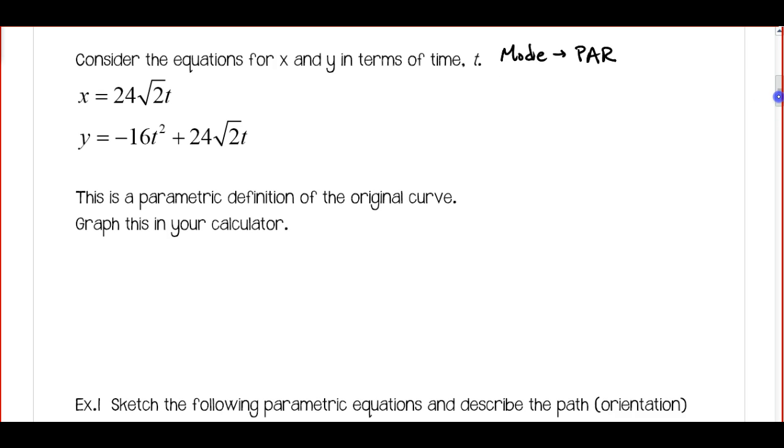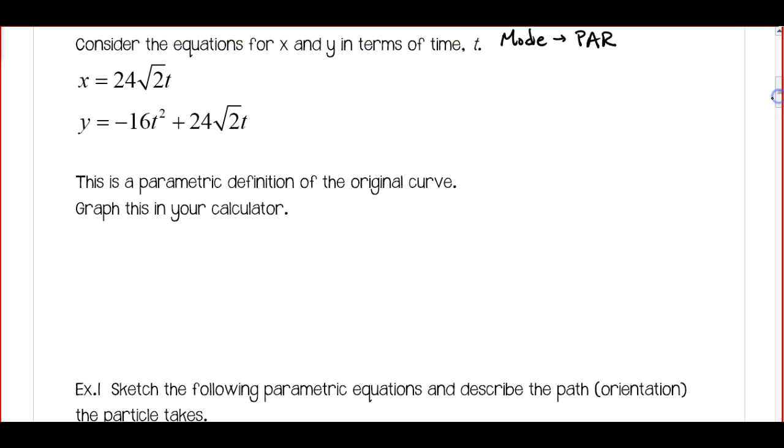And we're going to go ahead and graph this. So for this particular one, if you go into your window, we want to change our tmin to equal negative 0.5 and we want our tmax to be 2.5. So we're only going to graph between negative 0.5 and 2.5 for our values of t. And then we're going to get x and y values at each one of these times.